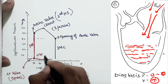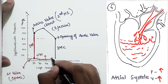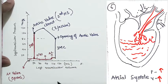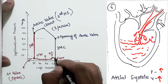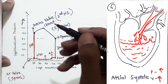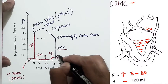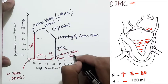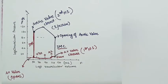Next comes atrial systole, where pressure slightly rises from zero to approximately 5 mmHg and volume continues to increase. When atrial systole ends, the ventricle begins contracting, ventricular pressure rises, and the AV valve closes — producing the first heart sound.